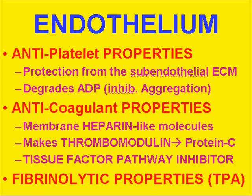Here's what Dr. Jekyll does. He has antiplatelet properties by virtue of the physical anatomic barrier it provides between the platelets and the ECM. Once that barrier is breached — and that's called hemorrhage — we have the beginning of things which trigger off primary coagulation. Endothelium also degrades ADP, and since ADP is produced by platelets, degrading it inhibits platelet aggregation.